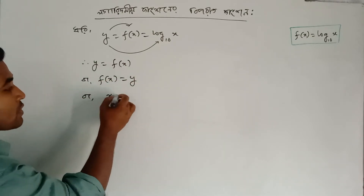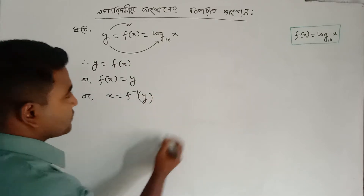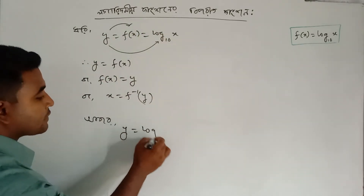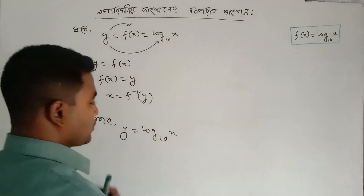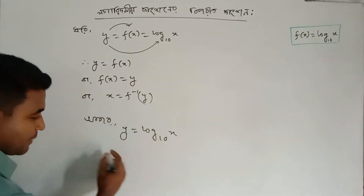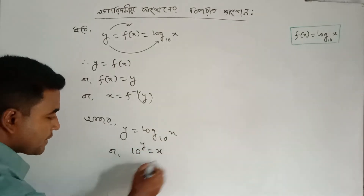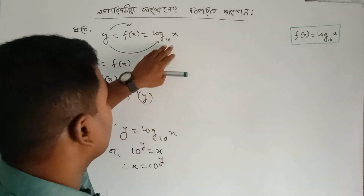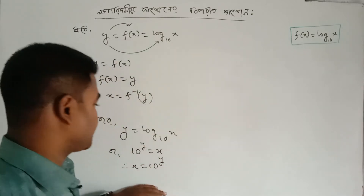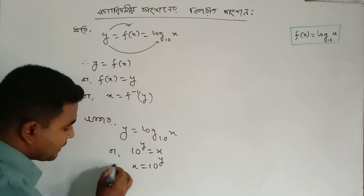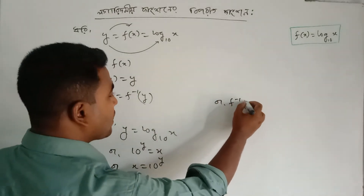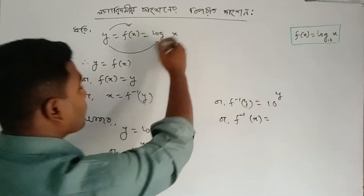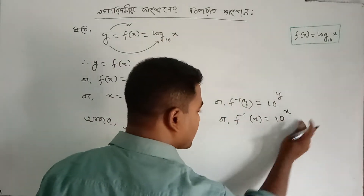f inverse y — our y equal to a range, then I can write in logarithm form. Converting to a logarithm form: if a to the power y equal to x, that means x equal to 10 to the power y. Then the logarithm function and exponential function — f inverse y equal to 10 to the power y. And if x equal to 10 to the power x, how are the functions related?